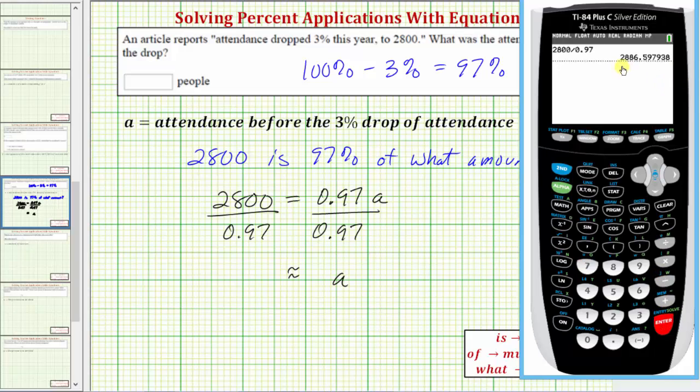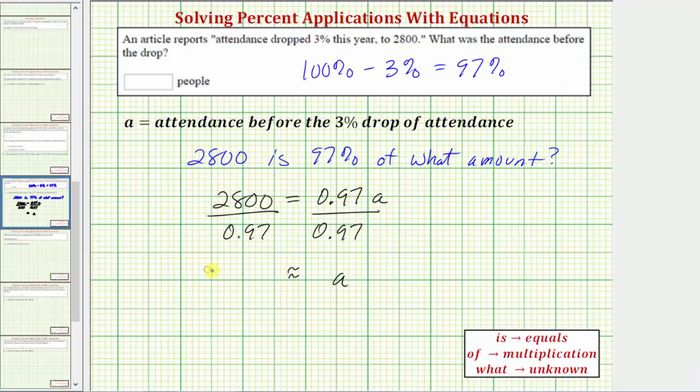This gives us approximately 2,886.6. But again, we're asked to round to the nearest whole number or nearest person, which means we round to the ones place value.